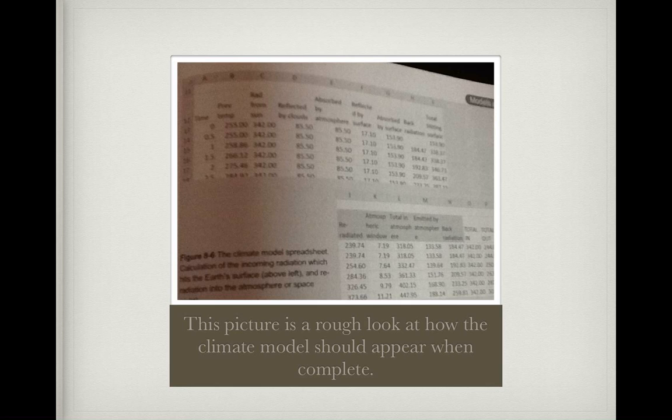One thing that may be confusing about the diagram is the fact that the temperature is in the 200s and 300s, which is because it's measured in Kelvin, so you have to subtract some number to get it back to Celsius. That's just one thing I want to be clear about regarding the model.